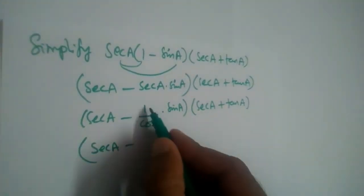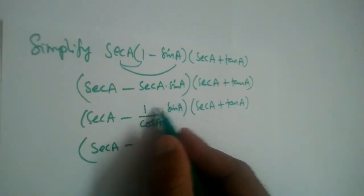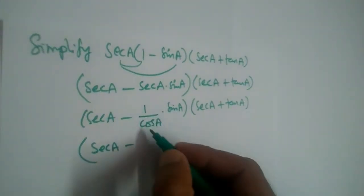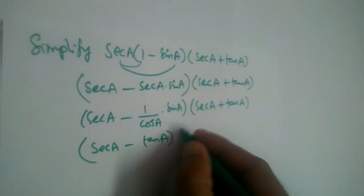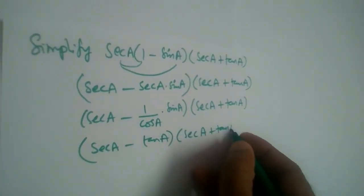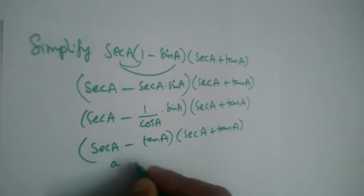Now this will become secant A minus - here 1 into sin is sin, sin divided by cos, sin divided by cos will become tan. So it is tan A and we have secant A plus tan A.